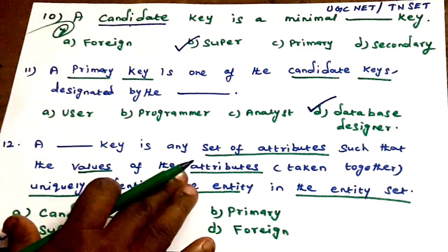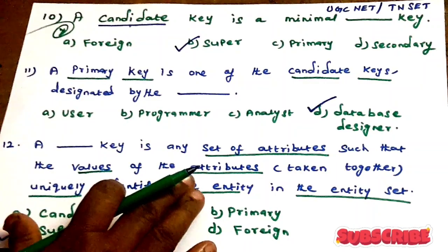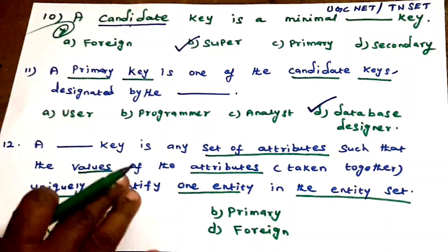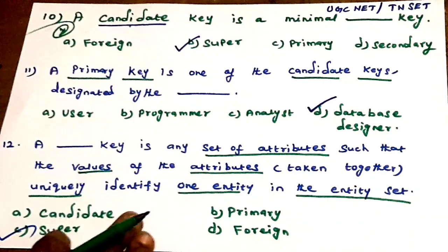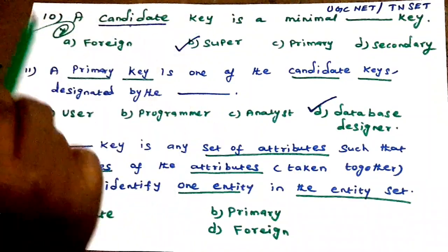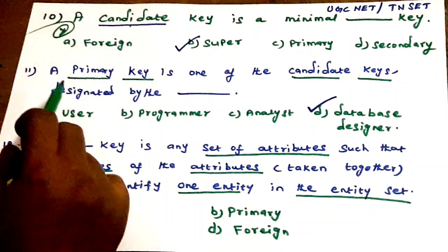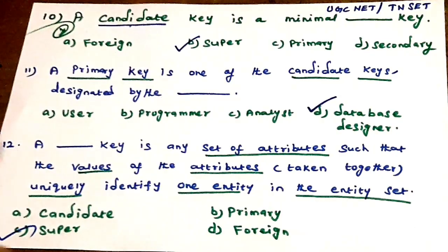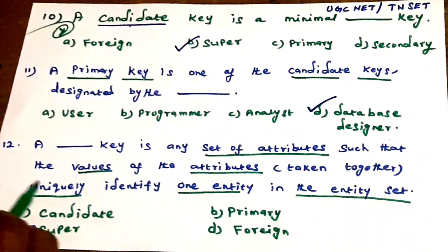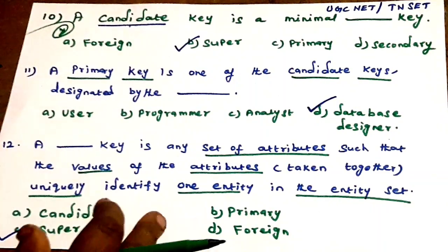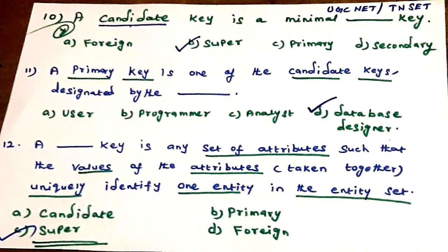These three questions are repeated in UGC NET and Tamil Nadu SET exams. Topics covered include types of keys in database management systems: candidate key is a minimal super key, and primary key is one of the candidates — very important.